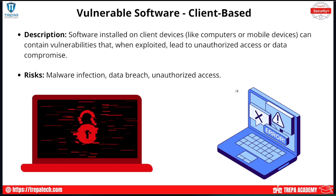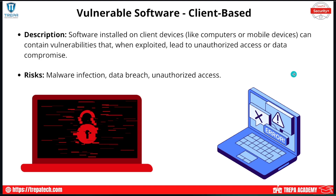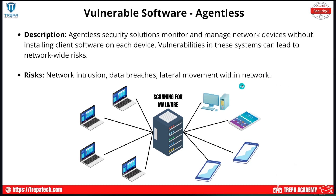Vulnerable software: software installed on client devices can contain vulnerabilities that, when exploited, lead to unauthorized access or data compromise. A major large-scale example is SolarWinds — an SNMP (Simple Network Management Protocol) software used throughout the government. It was installed on Windows Server machines as the SNMP manager, and a backdoor was added. Sometimes you can install software you think is legitimate and it has a backdoor. Risks include malware infection, data breach, and unauthorized access.